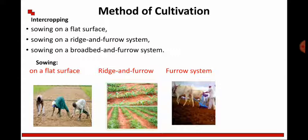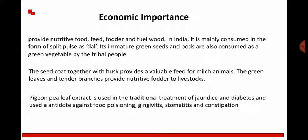The method of cultivation for Pigeon Pea includes propagation by intercropping with different crops. It is cultivated by the sowing method, using different sowing systems such as flat surface, ridge, and furrow systems. The economic importance of Cajanus cajan is that it provides nutritive food, beer, and fodder.